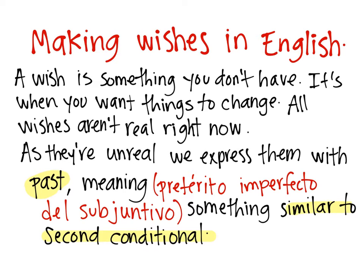Today we're going to focus on a variation of our second conditional. Remember, second conditional is for expressing unreal things. Today we're going to be talking about other unreal things — in this case, making wishes. A wish is something you don't have; it's when you want things to change. All wishes are unreal right now, at least for now. As they're unreal, we express them with past, meaning something similar to the second conditional.